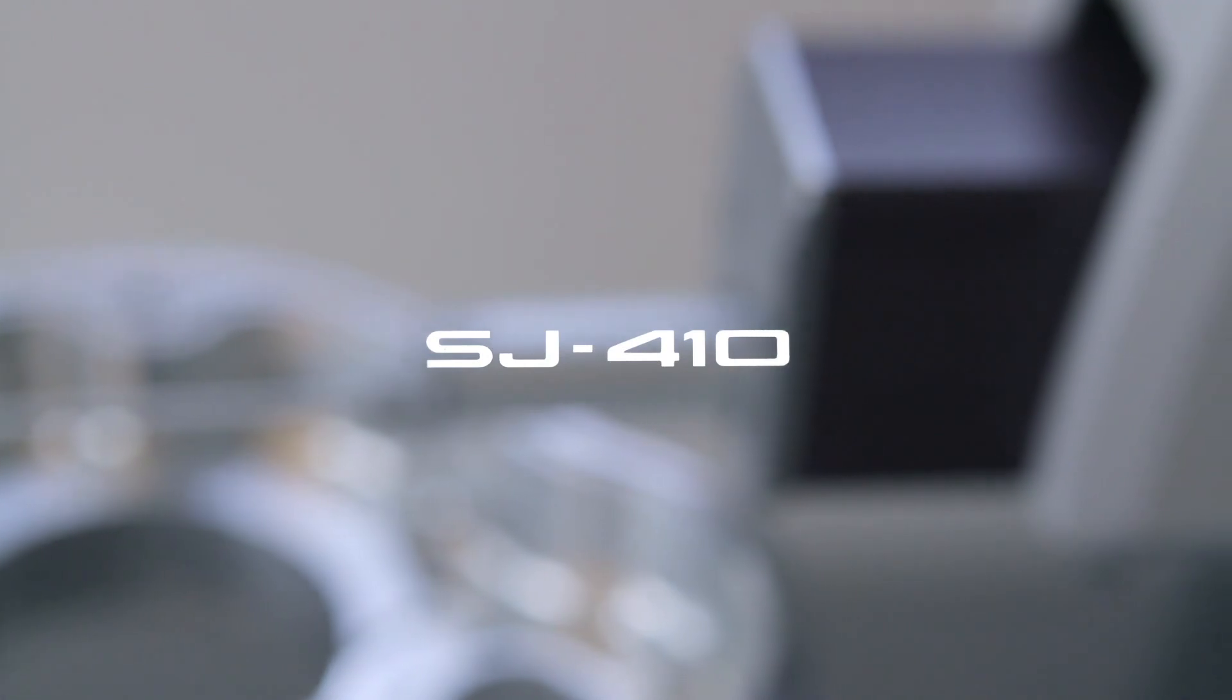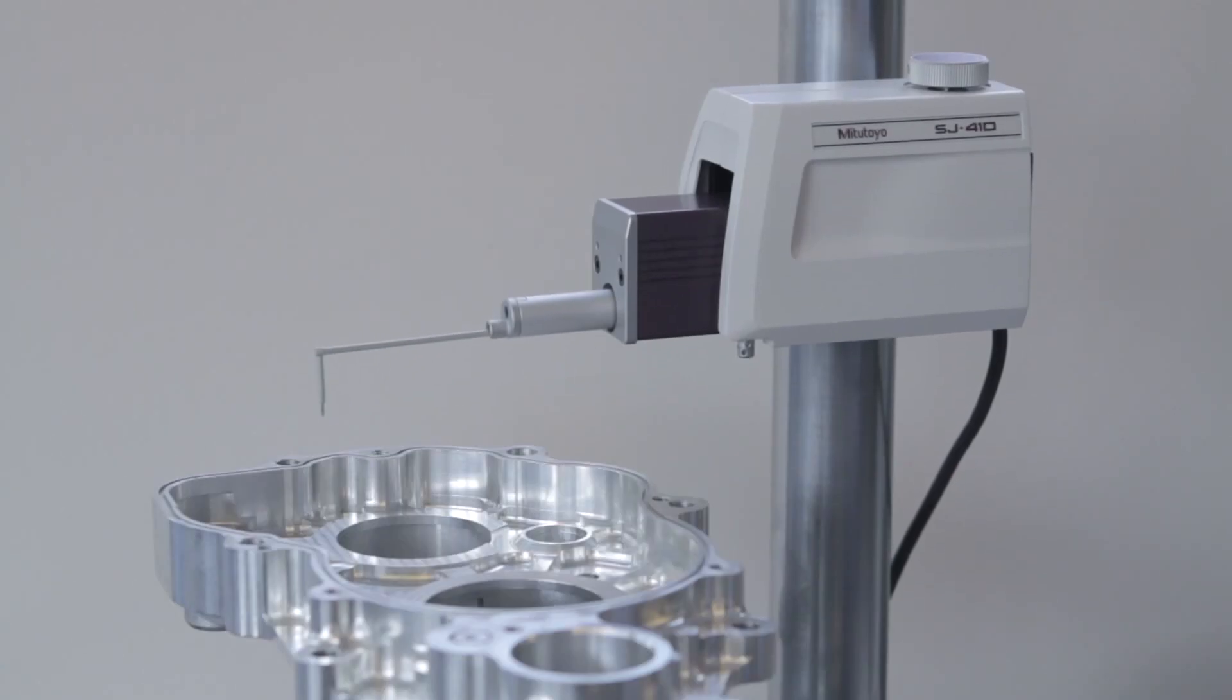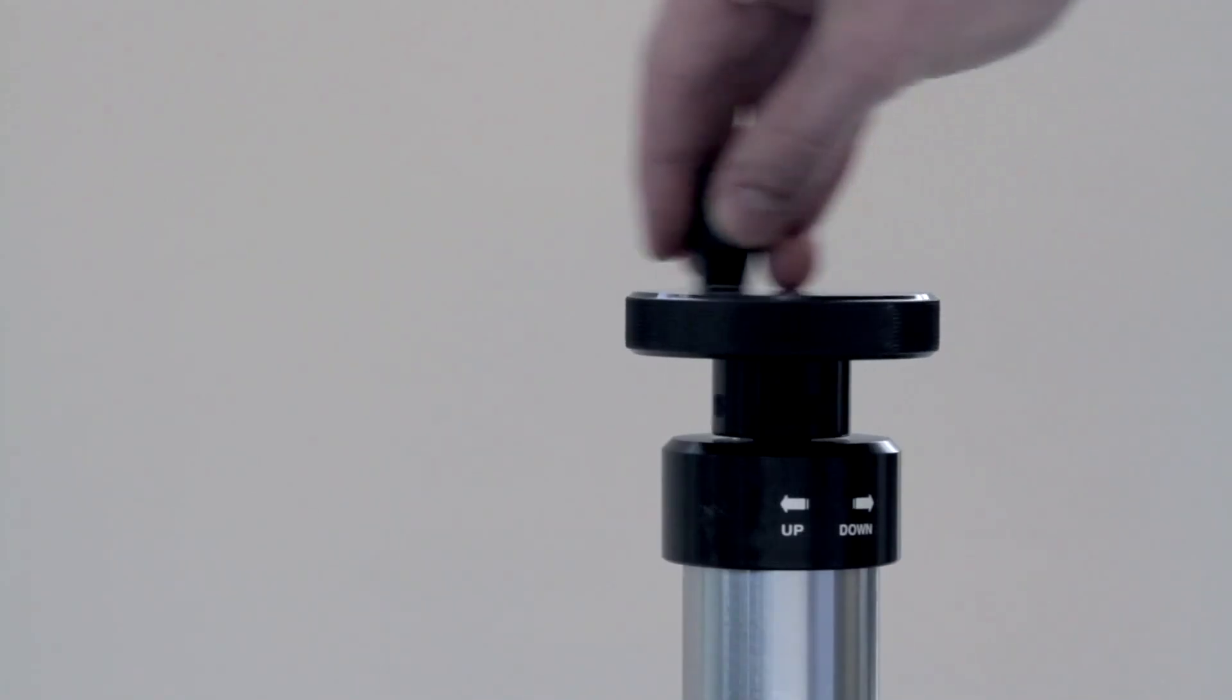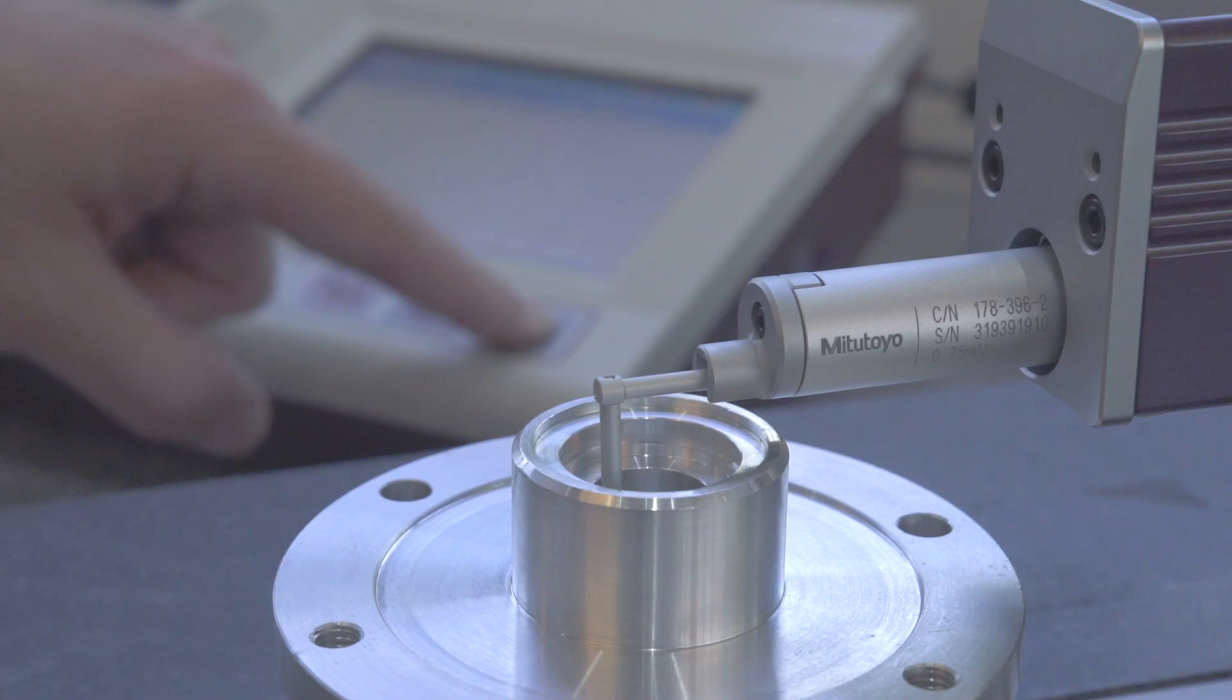The SJ410 range of Portable Surface Roughness Testers from Mitutoyo allows skidded and skidless measurements of a wide range of component features.